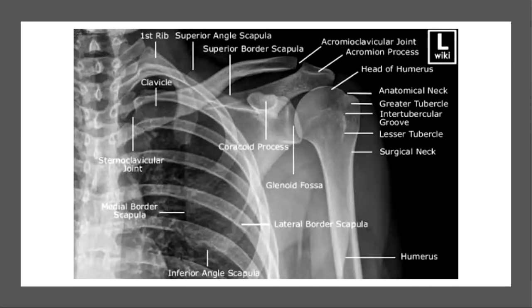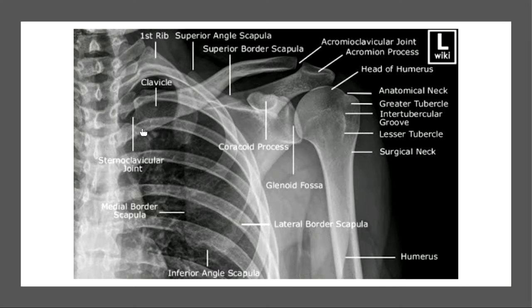This is an excellent radiographic representation of all the different parts of the humerus, clavicle, and scapula — not found in the positioning book. You can see the first rib, the clavicle, the SC joint between the sternum and clavicle, the medial border of the scapula, the inferior angle of the scapula, the lateral border, and the coracoid process.